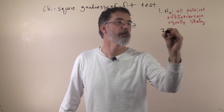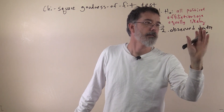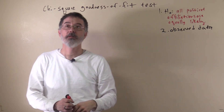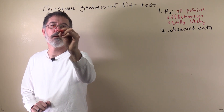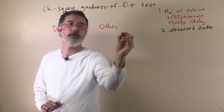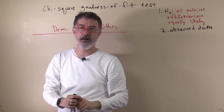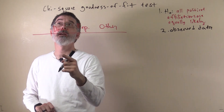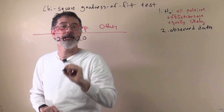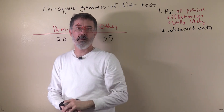Next we will look at our observed data, the data we actually get in our study. We have Democrats, Republicans, and other. Each person comes in and they have to say which of these they are. We will say 20 of our participants say they are Democrats, 20 say they are Republicans, and 35 say that they are something other than Democrat and Republican.